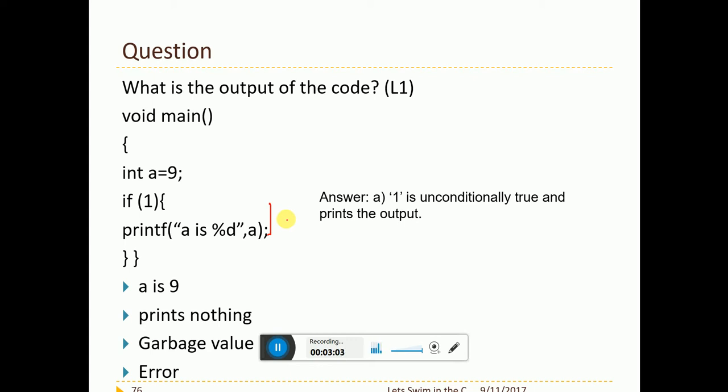If of 0 is always false. So please remember, if I use if 0, that means it is false. If I use if of 1, that means it is always true.